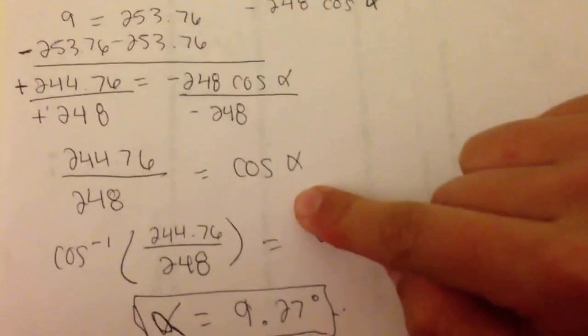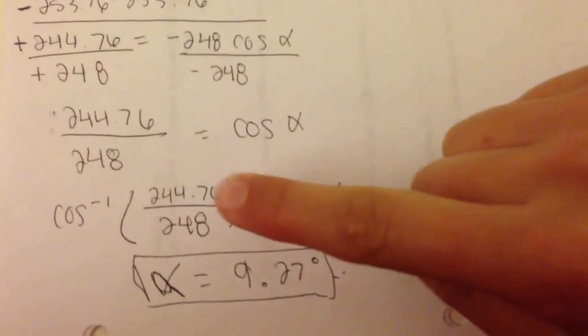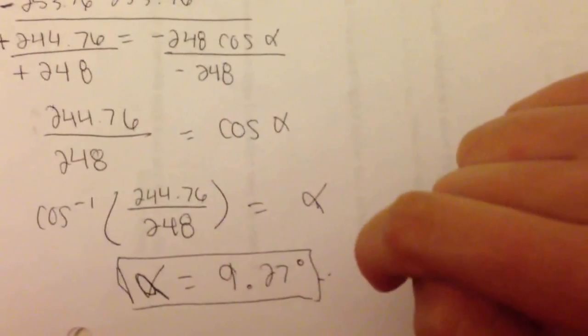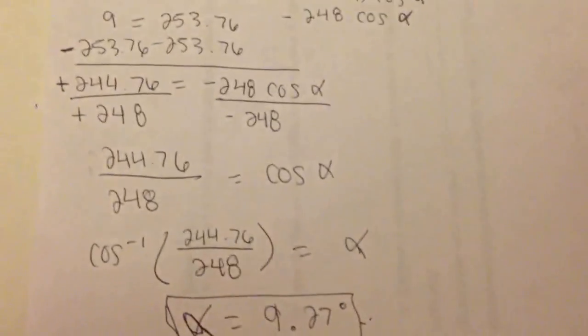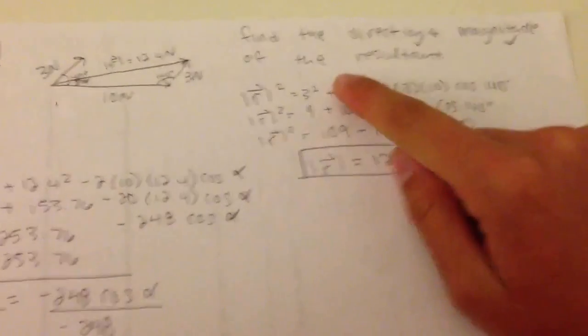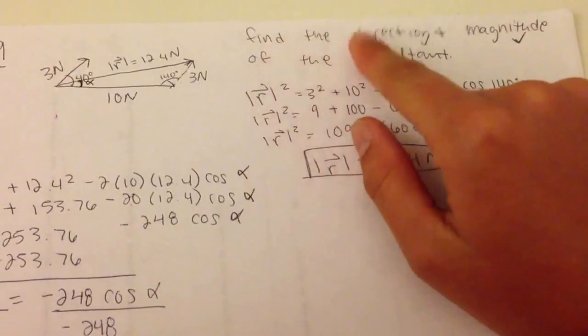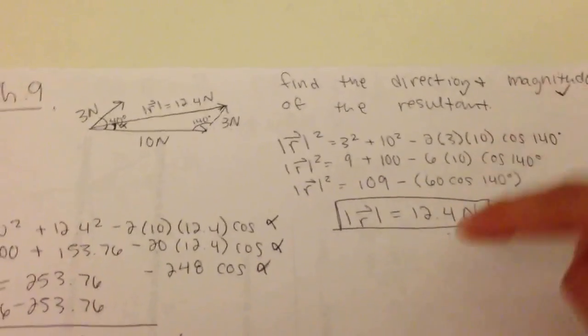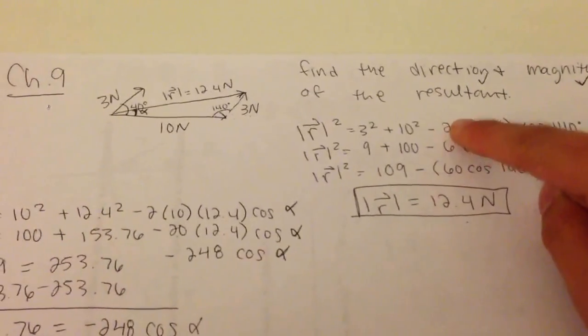Then we just use inverse cosine like we've been doing, type it all into my calculator, and the fishy equals 9.27 degrees because we solved this whole thing in degrees, keeping it in correlation with these. So looking at our instructions again, find the direction, check, right there, and magnitude, right there, of the resultant.